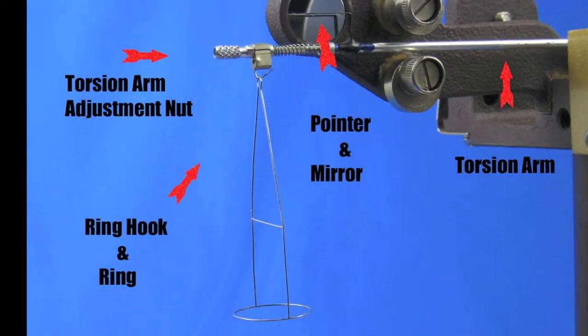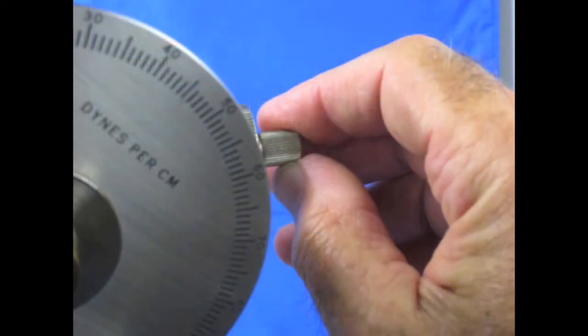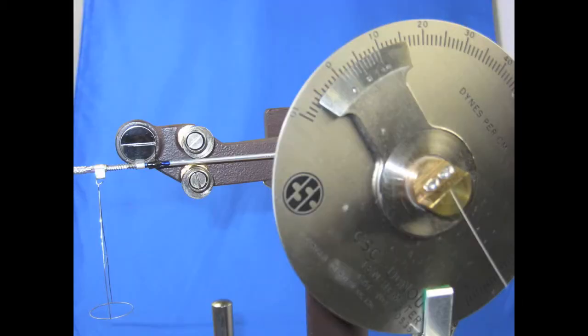This will move the torsion arm down to the stop. The next step is to move the arm pointer back to the line by turning the adjustment knob clockwise until the arm pointer lines up with the mirror line. Next, loosen the dial clamp and turn the dial until the dial zero line matches the zero line on the vernier.